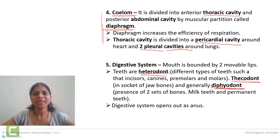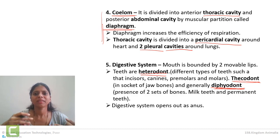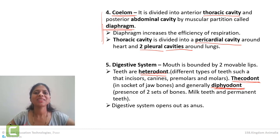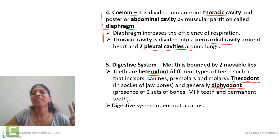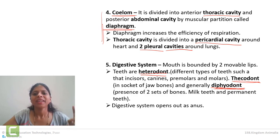Remember these three terms: heterodont — different types of teeth; thecodont — teeth embedded in jaw bones; and diphyodont — teeth come twice in a lifetime. These are the key terms about mammalian teeth.